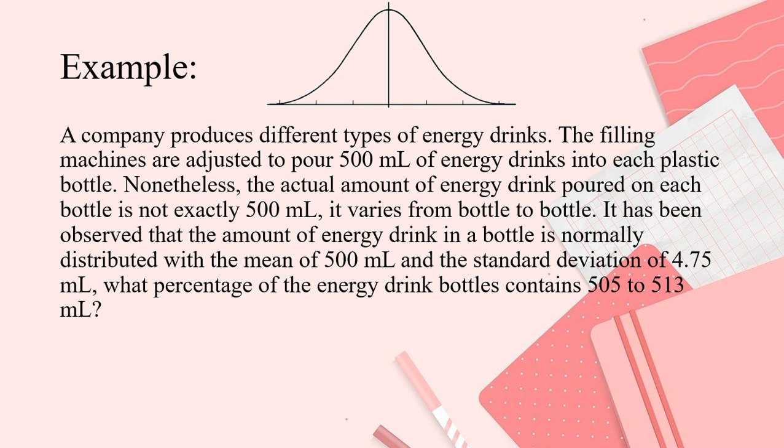Let's have another example. So, for this example, a company produces different types of energy drinks, the filling machines are adjusted to pour 500 ml of energy drinks into each plastic bottle. Nonetheless, the actual amount of energy drink poured on each bottle is not exactly 500 ml. It varies from bottle to bottle. It has been observed that the amount of energy drink in a bottle is normally distributed with the mean of 500 ml. So, our given is 500 ml and standard deviation is 4.75.